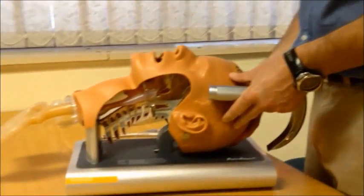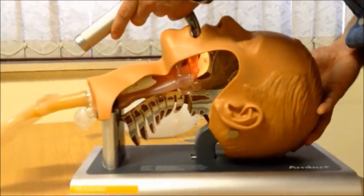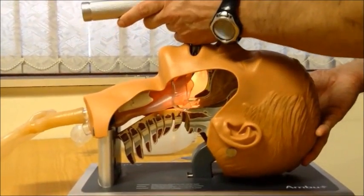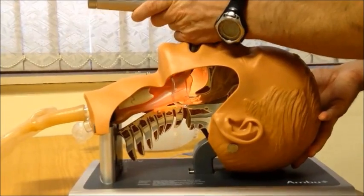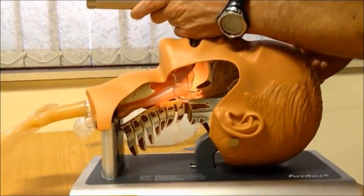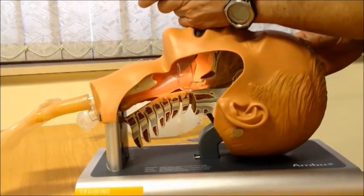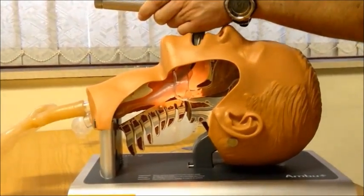You would now position your patient and insert the blade into the right side of the mouth, sweeping the tongue to the left and then gently advance the blade along the curve of the tongue until you reach the epiglottis. Please note that you should never tilt the ET tube in order to visualize the airway as this can cause soft tissue damage in the pharynx as well as teeth damage in the mouth.